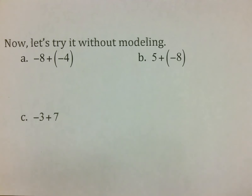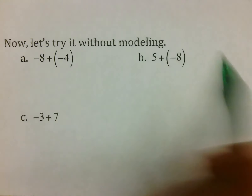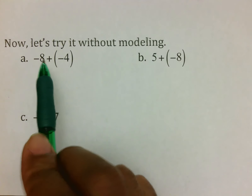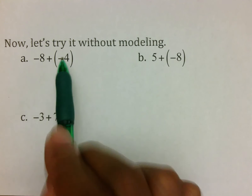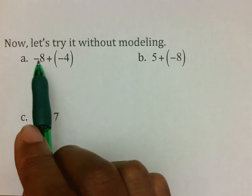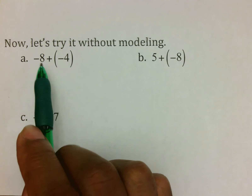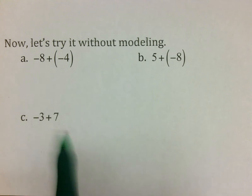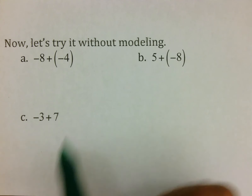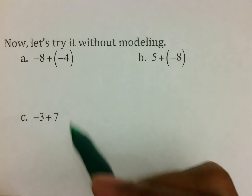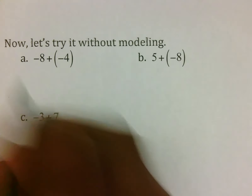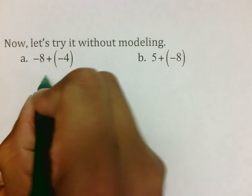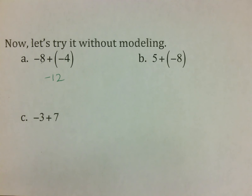Let's try this without modeling. You can imagine it or use modeling, but think about this: if I put 8 negatives and 4 negatives on the paper, is anything going to cancel? The only time they cancel is when there's a negative and a positive. Since both are negatives, nothing cancels — so you simply combine them. Eight negatives and four negatives make twelve negatives. Your answer is negative 12.